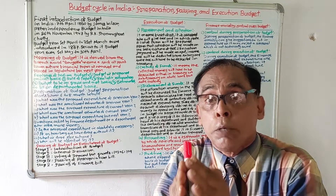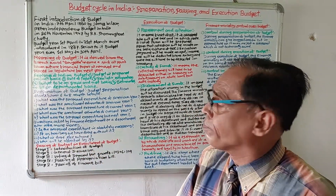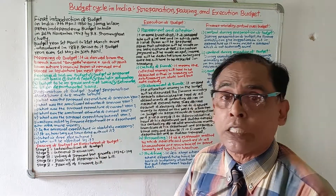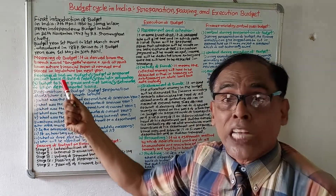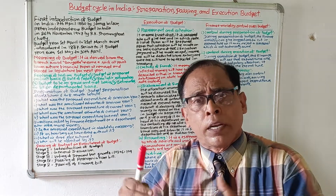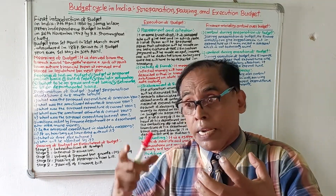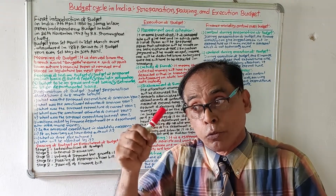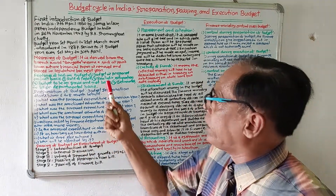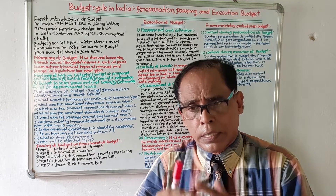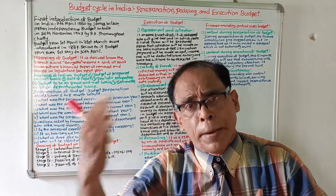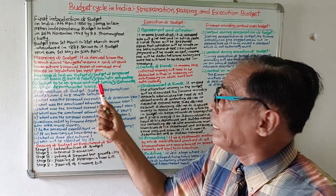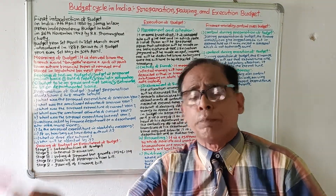Now we will see how budget is prepared in India. First, we must know the features of the Indian budget. Feature one: budget is prepared on cash basis, meaning revenues and expenditures are mentioned in cash terms. Feature two: rule of lapse — the budgetary allocation must be utilized within the budgetary year, otherwise it will lapse. Feature three: realistic estimation — departments receive only as much money as they demand.